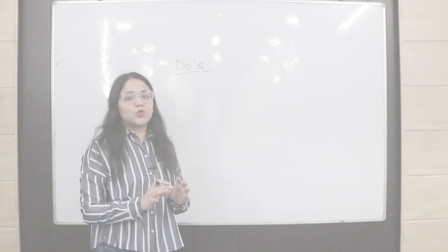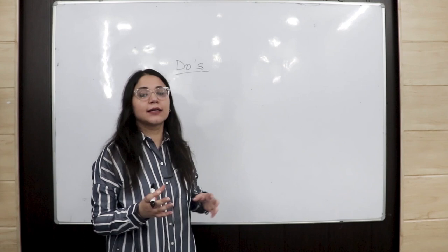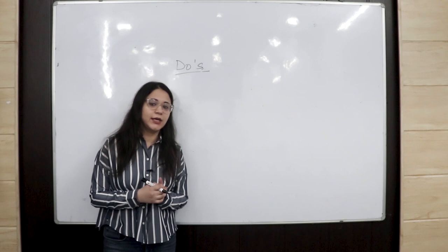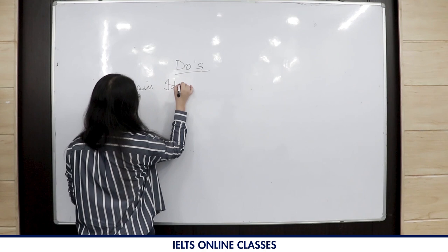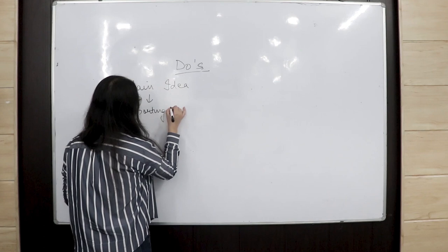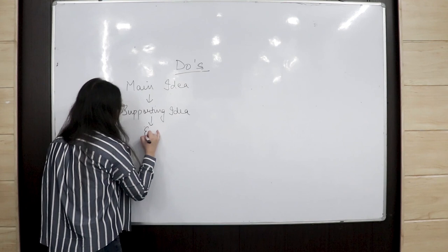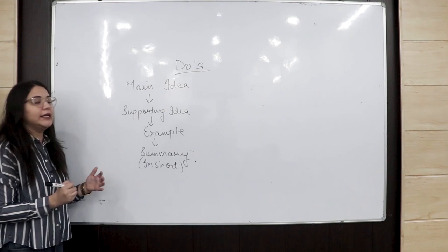Those are the four parameters on which we are given bands in Task 2. Now let's discuss some do's for scoring more bands in writing. The main problem students face is how to write their ideas. First, start by writing the main idea in your body paragraph. After that, write the supporting idea to further explain the main idea. If you have an example, include it, then write a short summary of the whole body paragraph.